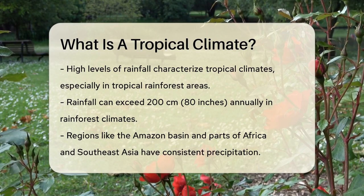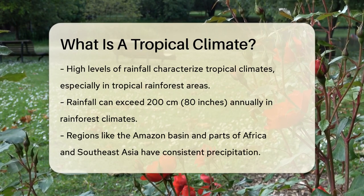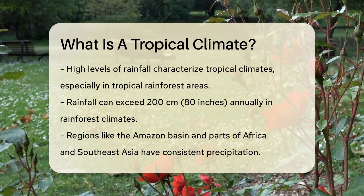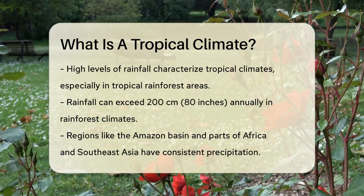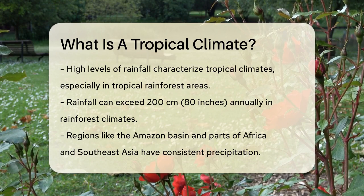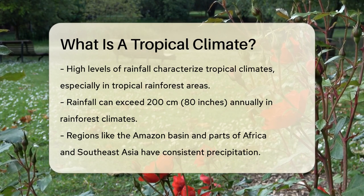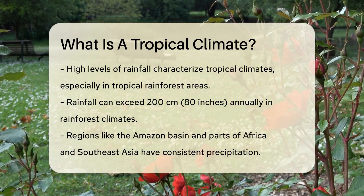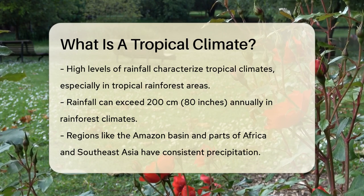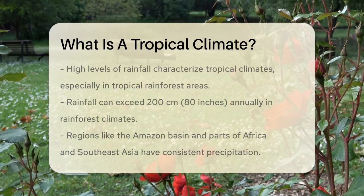One of the most distinctive features of tropical climates is the high level of rainfall. In tropical rainforest climates, for example, you can expect heavy rainfall all year round, often exceeding 200 centimeters or 80 inches annually. These areas, such as the Amazon basin and parts of Africa and Southeast Asia, have no dry season or at most two dry months, ensuring consistent precipitation throughout the year.